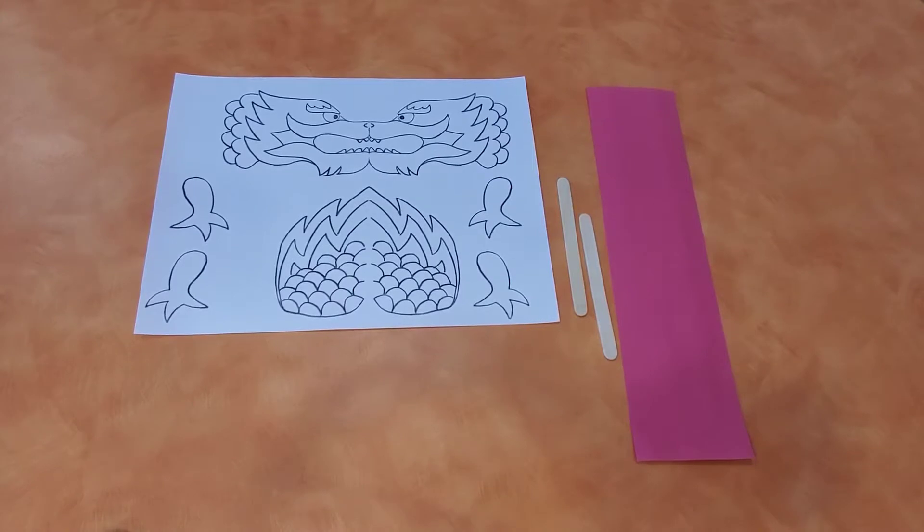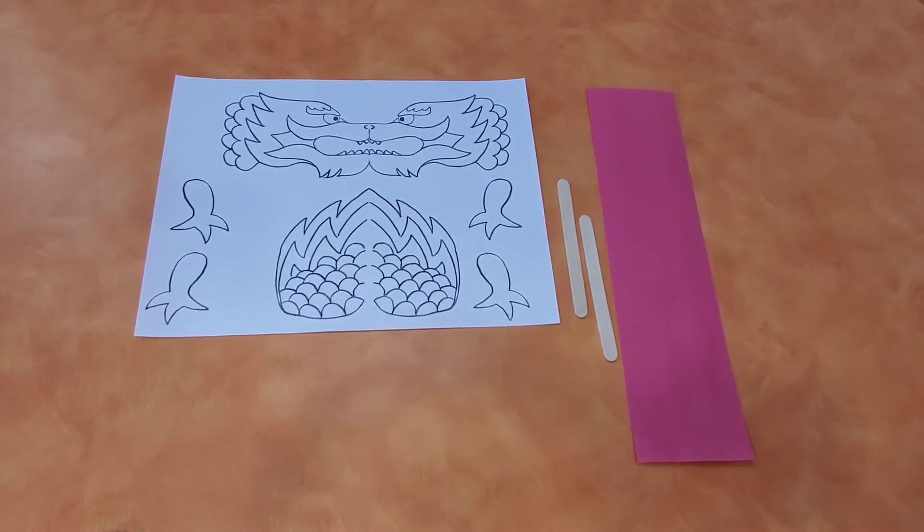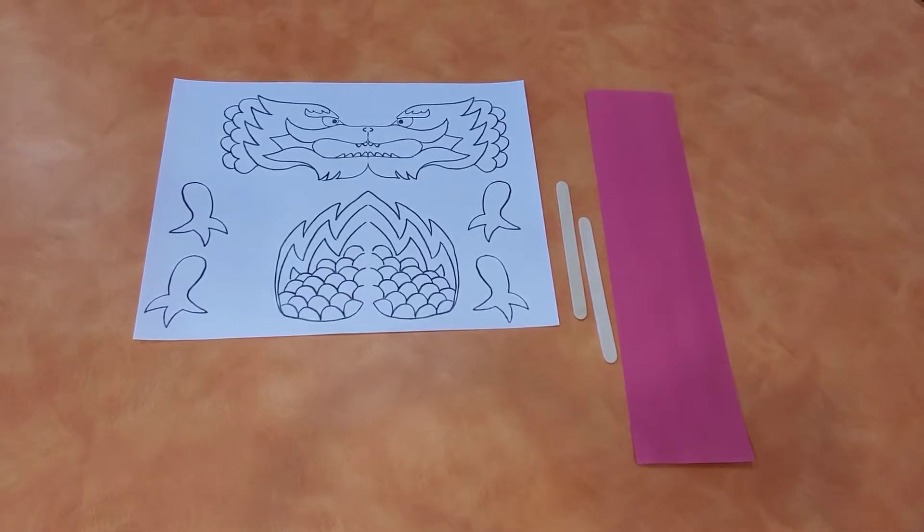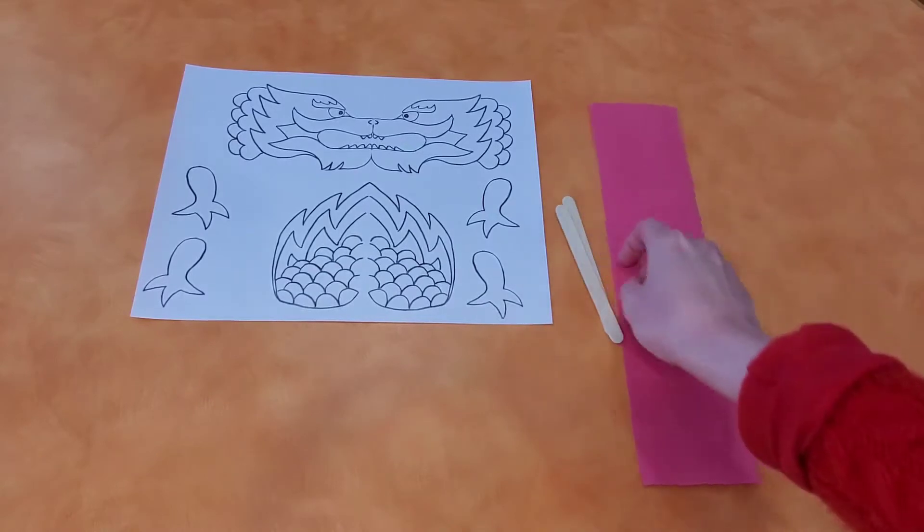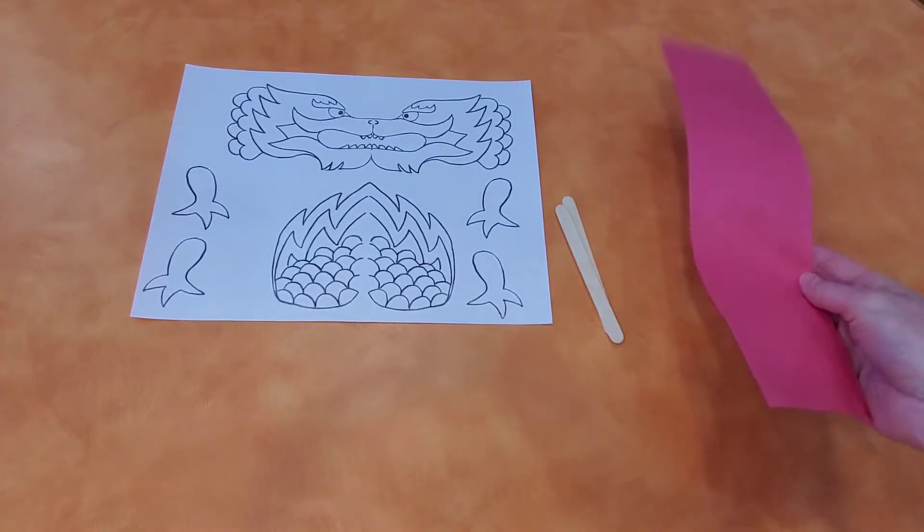We're going to make a dragon puppet in honor of Chinese New Year. When you sign up to receive a craft, you will receive this dragon template. You will get two popsicle sticks and this piece of construction paper.